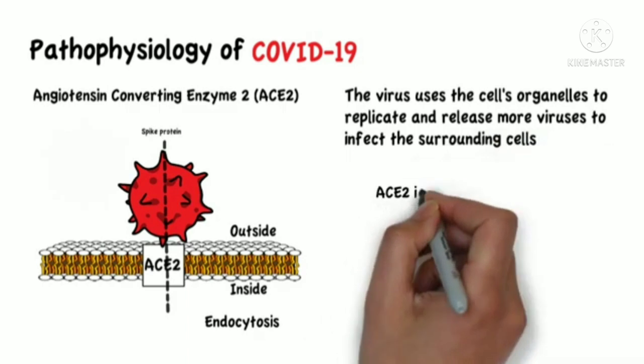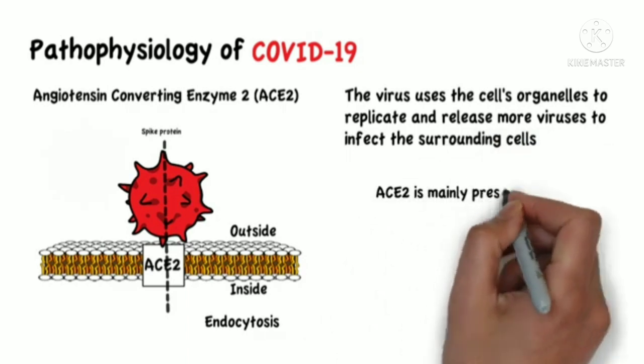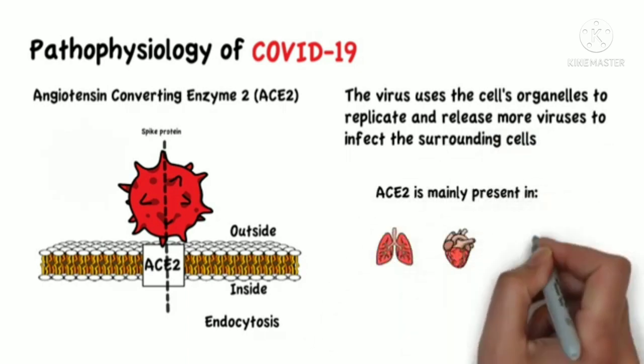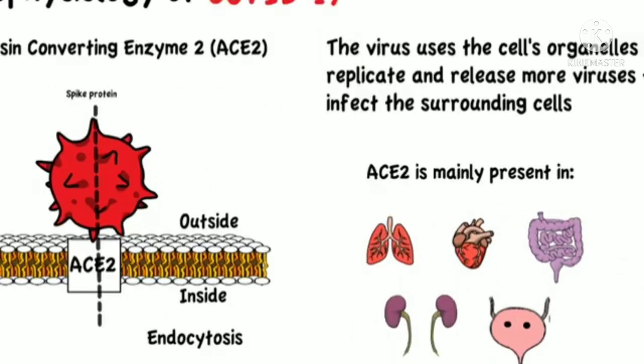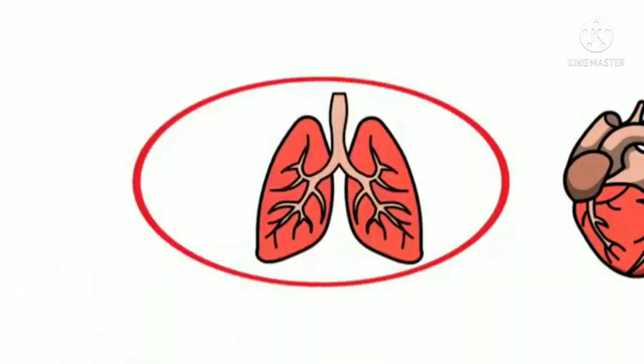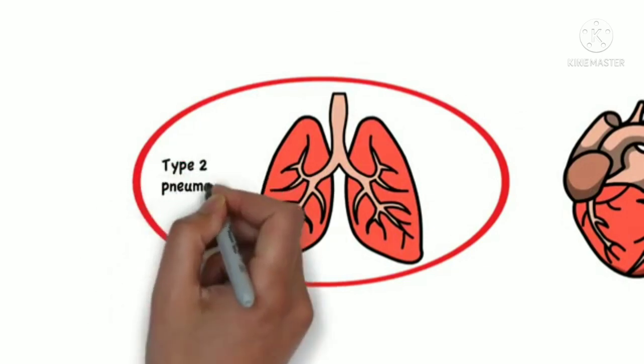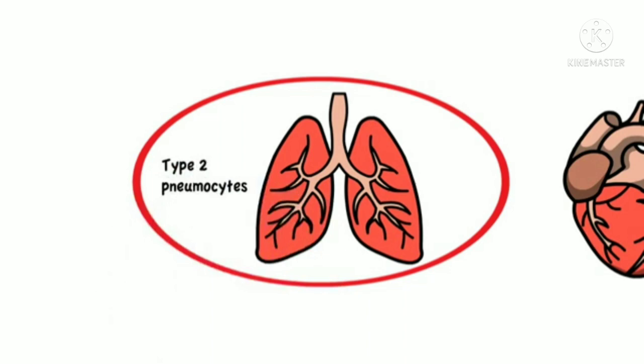Angiotensin-converting enzyme 2 is mainly present in lung, heart, ileum, kidney, and bladder tissue. But the lung epithelial cells are the main target of SARS-CoV-2, namely type 2 pneumocytes in the alveoli.